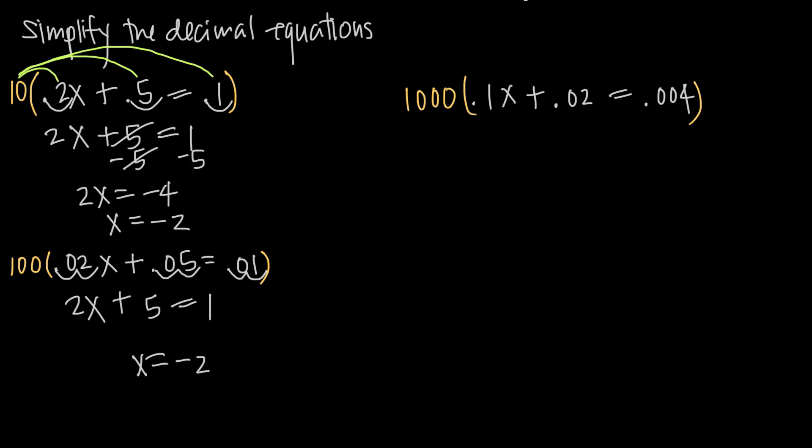When we multiply 1,000 by .1, let's get more room up here, we have 1, we're going to move the decimal over three places, so 1, 2, 3, we fill in with zeros here, and we get 100, so this is going to give us 100x.